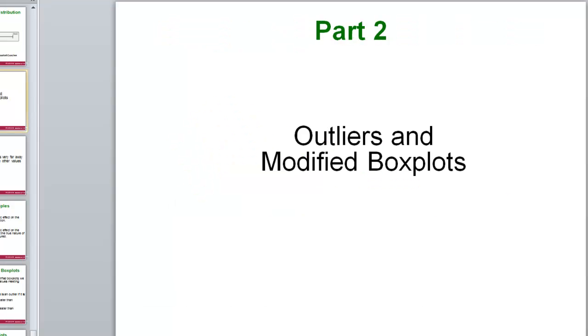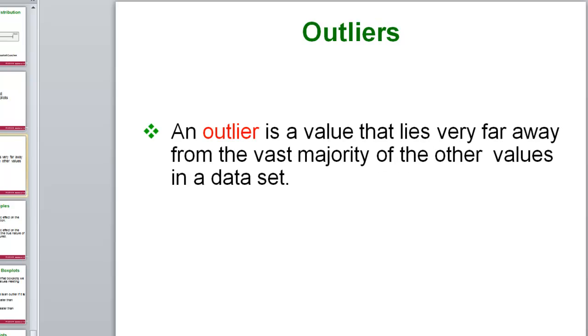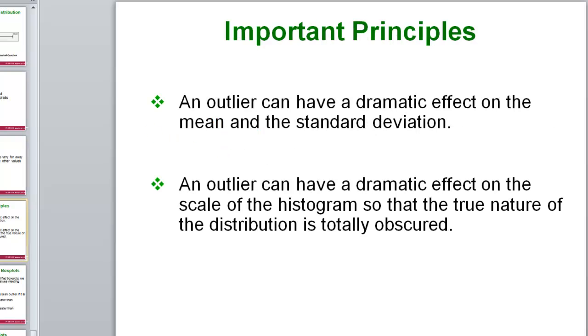Now outliers and modified box plots. As I said before, there are two types of box plots: the regular box plot and the modified one. We are going to try and always do modified ones. Unless we are asked otherwise, just assume if you are asked to do a box plot, you are supposed to do a modified box plot. The only difference between the two is modified box plots take into account outliers and they describe outliers on the graph.